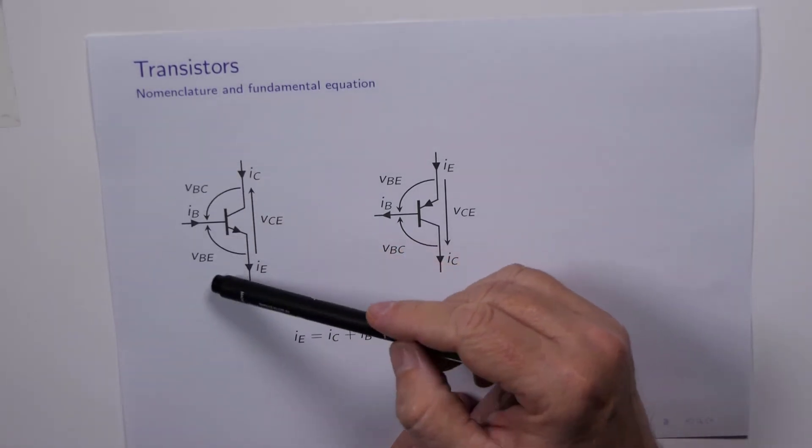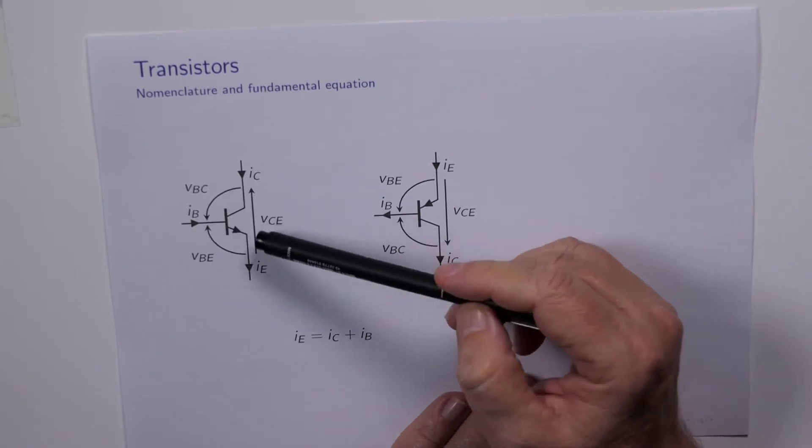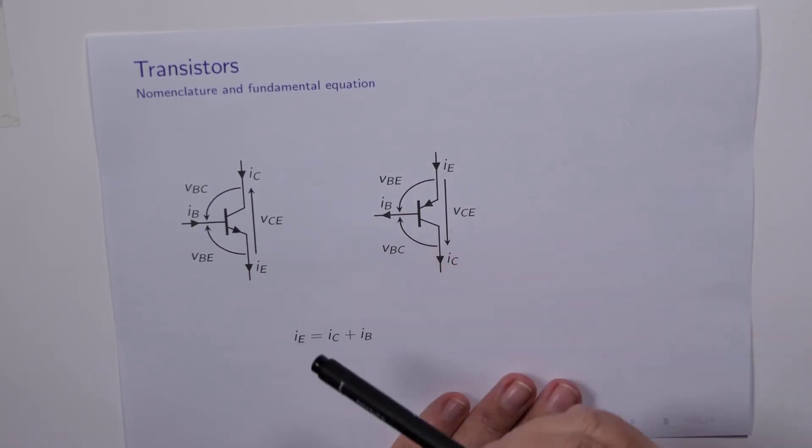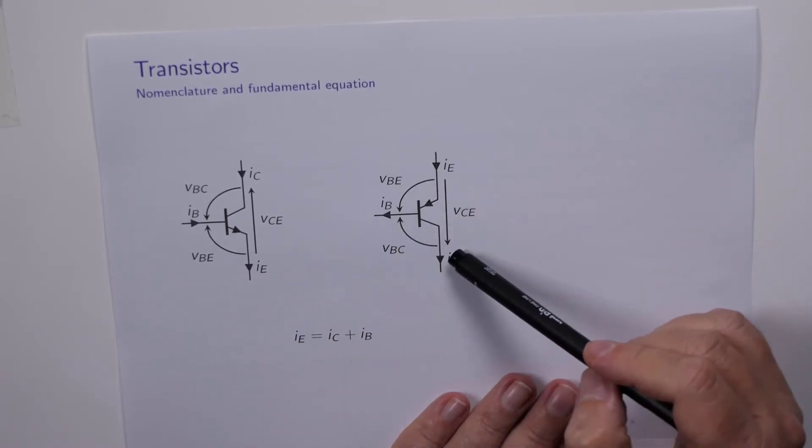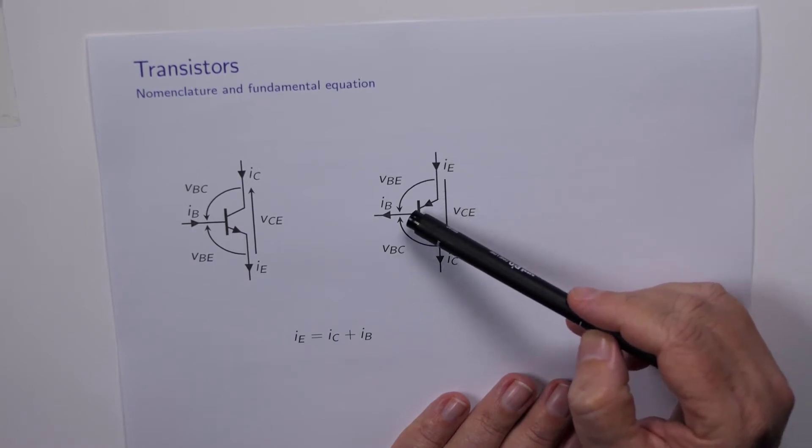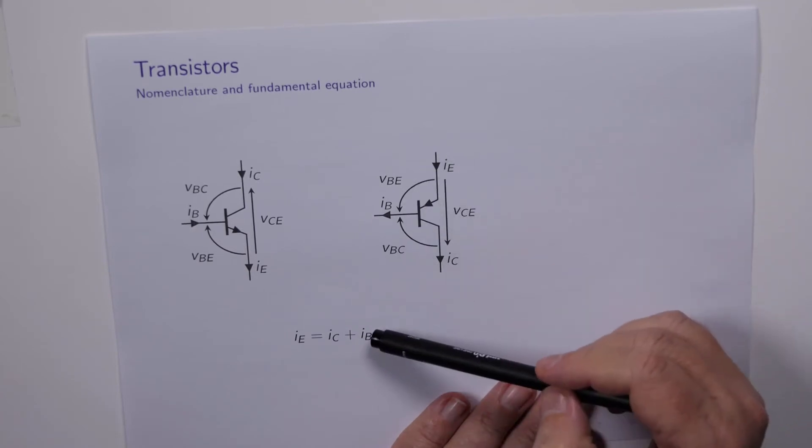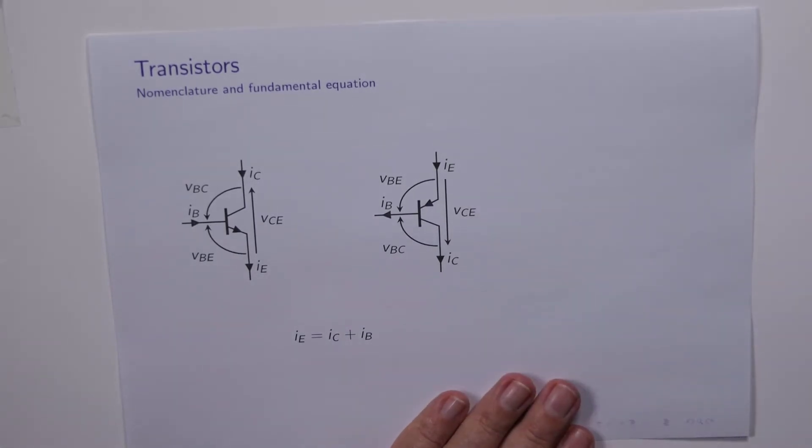It's pretty clear from this and Kirchhoff's current law that with these two going in and this one coming out, we must have IE equals IC plus IB. This equation is always true. It's also always true for the PNP device, but the emitter current is coming in and it leaves via the base and the collector, but this fundamental equation is always true.